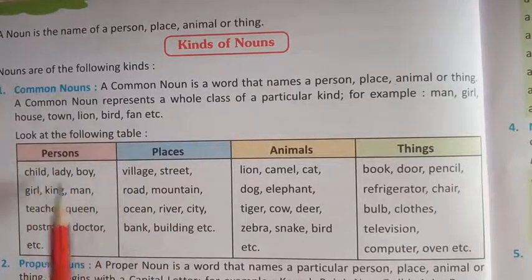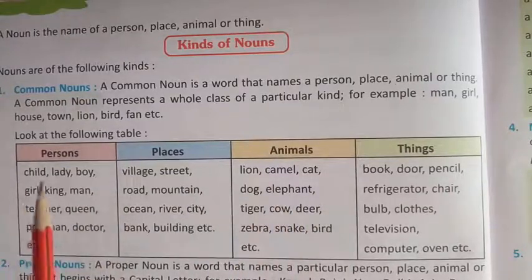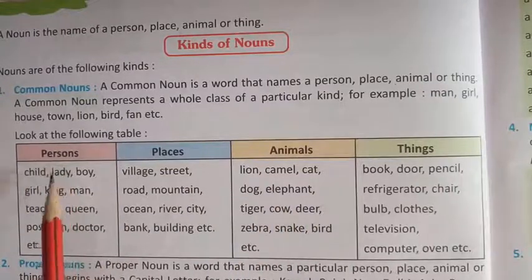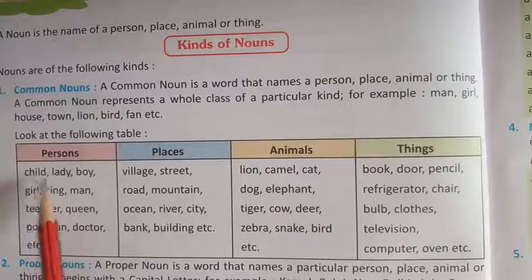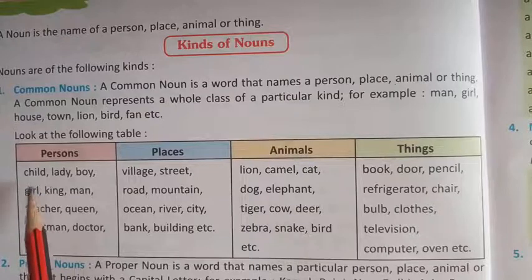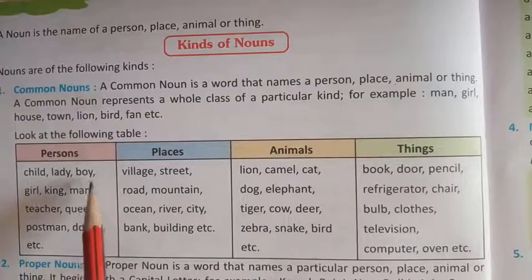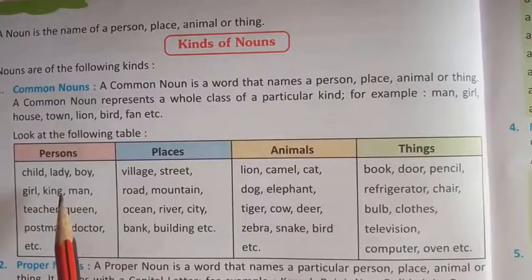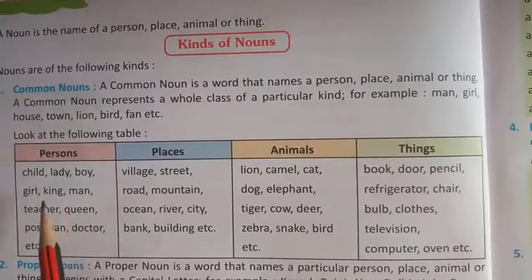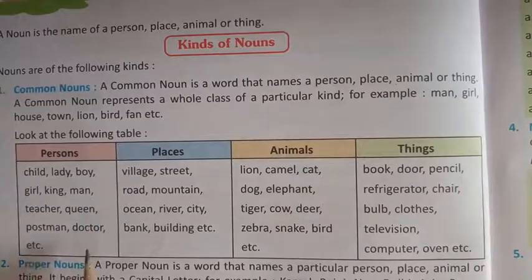Look at the following table. This table से आपको Common Noun को पहचानने में आसानी होगी. जैसे किसी persons को — child, lady, boy — different boys होते हैं, girls होते हैं. तो उनकी जाति के नाम को हम Common Noun कहेंगे. Just like: king, man, teacher, queen, postman, doctor, etc.